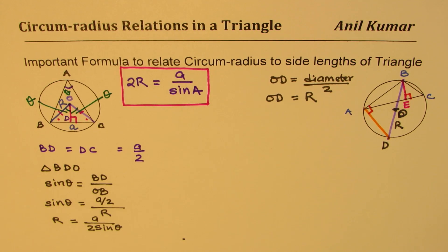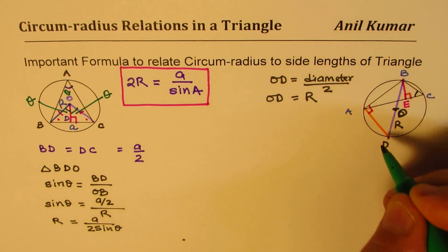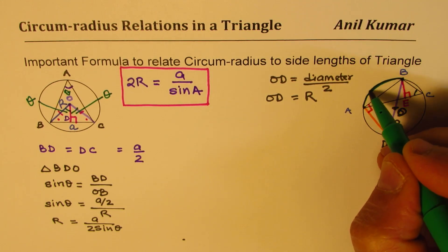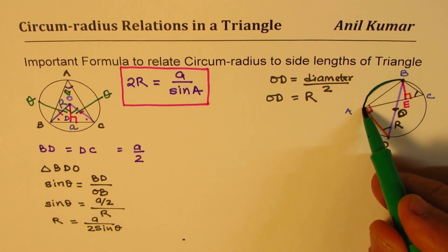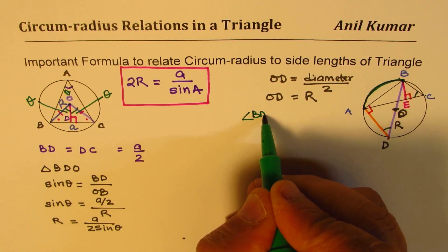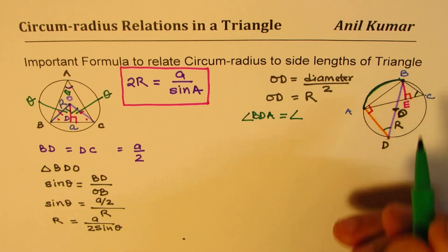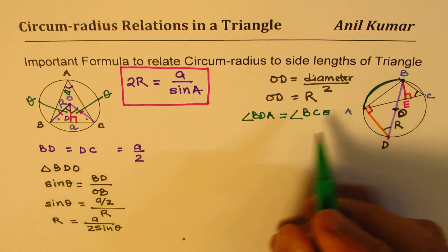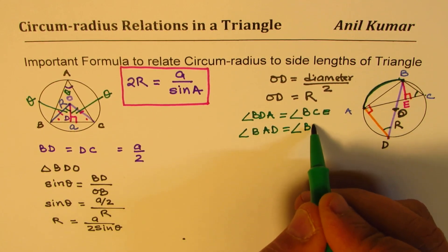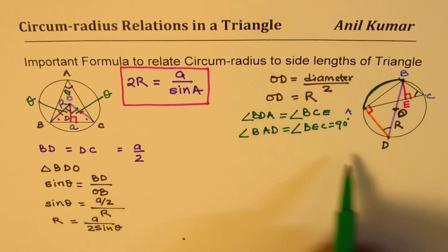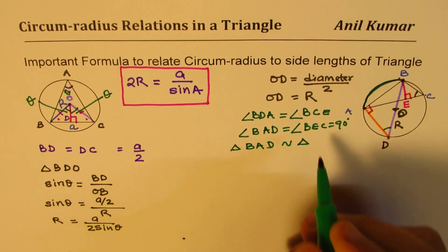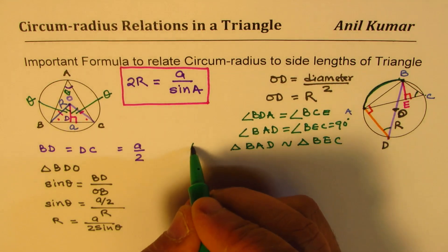We also see that these two angles should be equal. The reason being that both these angles are on the same arc, arc AB. So angle BDA and angle BCA, both are on this arc. We have that angle BDA is equal to angle BCE, and that is 90 degrees. So we know angle BAD is equal to angle BEC. Both of them are 90 degrees. From this, we can say that triangle BAD is similar to triangle BEC. AA property.